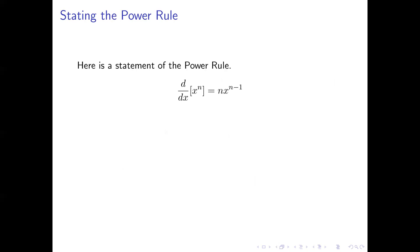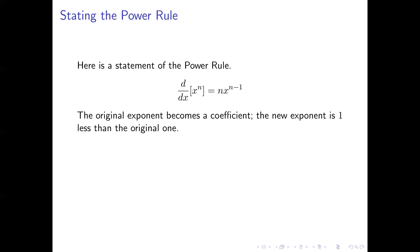Let's begin by stating the power rule. The power rule is the same whatever the exponent is. Here's the general formula: the derivative with respect to x of x to the power n, for any constant exponent n, is equal to n times x to the power n minus one. So notice what happens here: we start with x to the power n, the exponent n becomes a coefficient in the derivative, and then we subtract one from the exponent to get the exponent of the derivative.